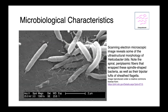This is a scanning electron micrograph of Helicobacter. You can appreciate that they are kind of spiral shaped — it almost is like a screw. They have periplasmic fibers wrapped around the organism, which is involved in their motility, as well as flagella that come off either end of the organism to help them move around.